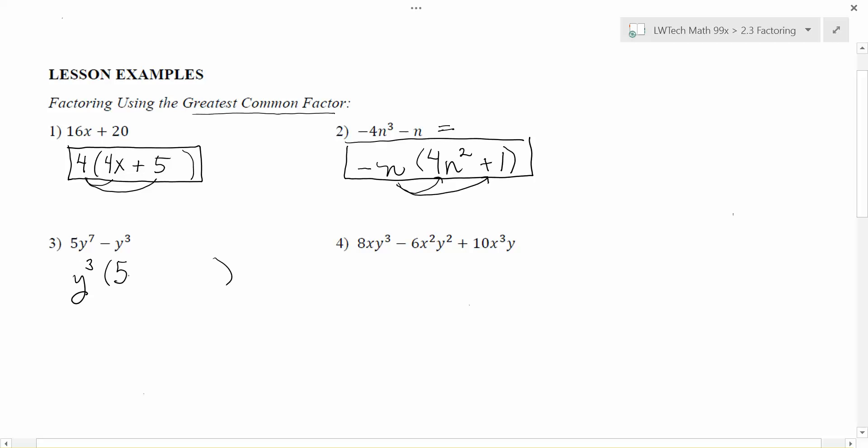5y⁷ - I need the 5 and I need four more y's, so that'll be 5y⁴. The y³ is exactly what I need. It's a minus, and then I would need to multiply by one in order to recreate that original expression. And again, do yourself a sanity check: y³ times 5y⁴ is 5y⁷, y³ times -1 will get me that -y³. So this would be my factored expression where I pull out the greatest common factor.